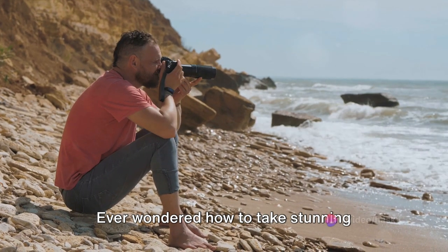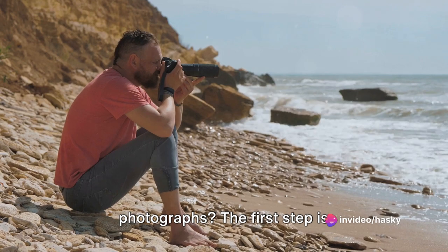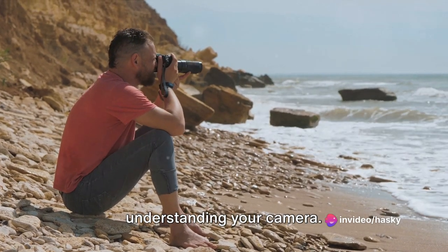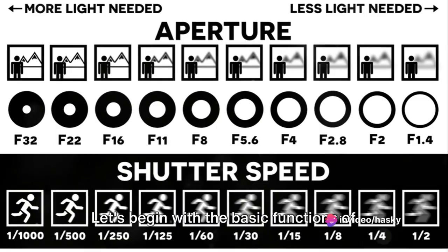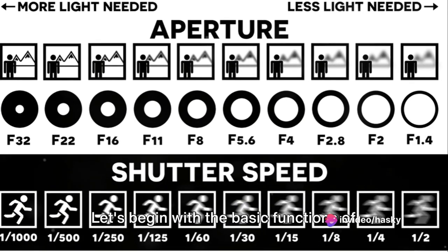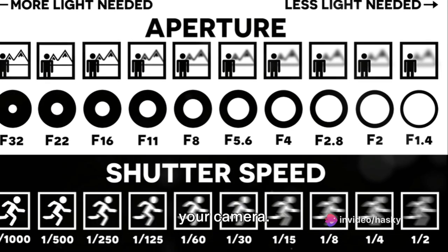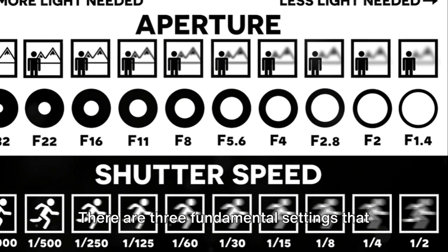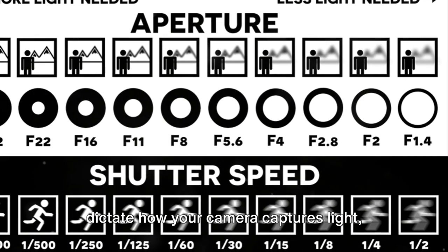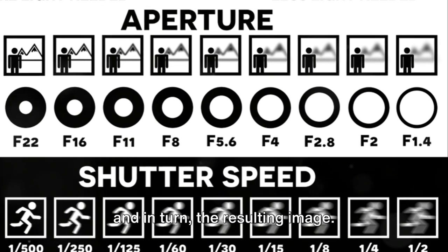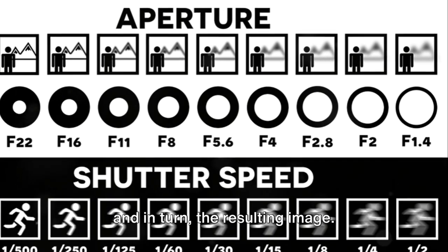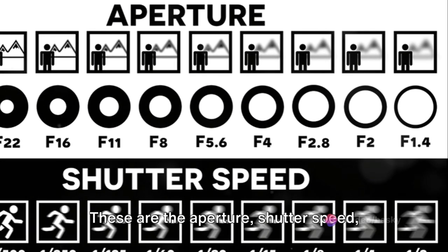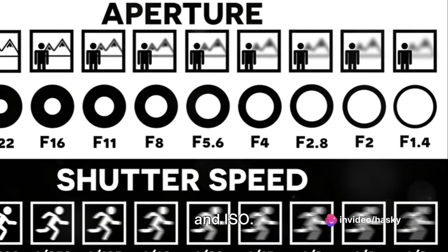Ever wondered how to take stunning photographs? The first step is understanding your camera. Let's begin with the basic functions of your camera. There are three fundamental settings that dictate how your camera captures light and, in turn, the resulting image. These are the aperture, shutter speed, and ISO.